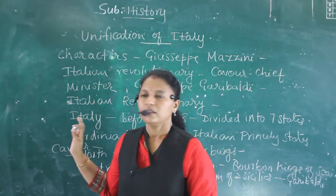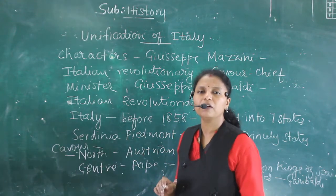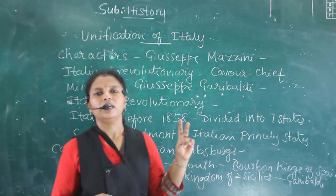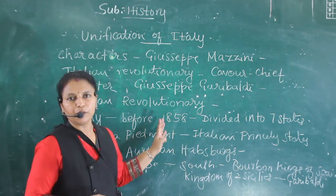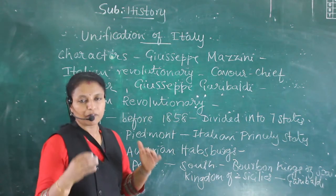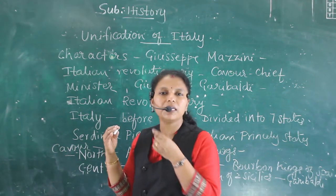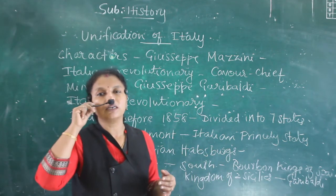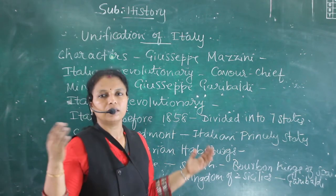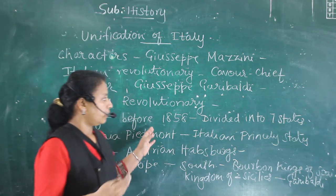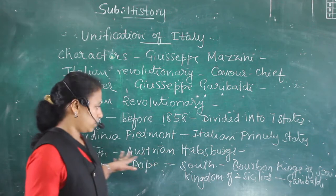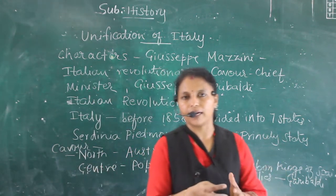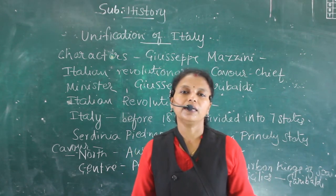After the Italian unification, King Victor Emmanuel II was proclaimed as the emperor of Italy — similar to how Kaiser William I was proclaimed emperor of Germany. The key characters were Mazzini, Garibaldi, Cavour, and Victor Emmanuel II. The map of Italy showed it was divided into seven states: the northern part under Austrian Habsburgs was defeated by Cavour through a diplomatic and military movement, and the southern Kingdom of Two Sicilies was defeated by Garibaldi. Thus Italy was made as a unified nation.